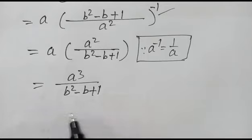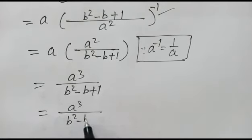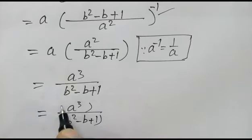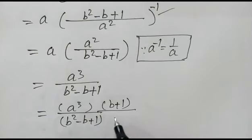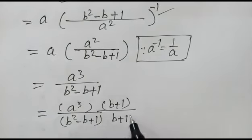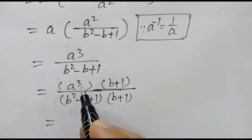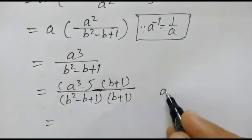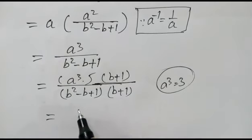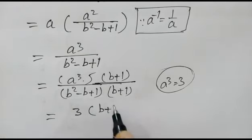We multiply numerator and denominator by b plus 1. Now a cubed is equal to 3, so we write 3 times b plus 1 over b squared minus b plus 1 times b plus 1.